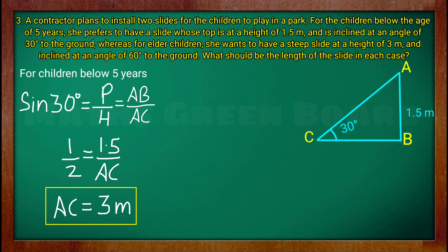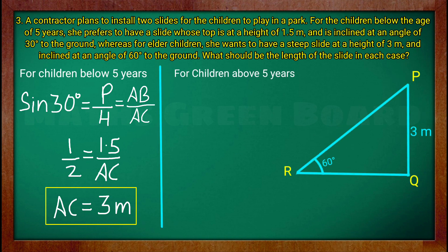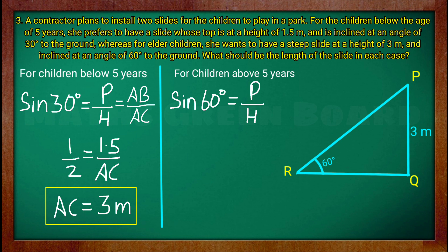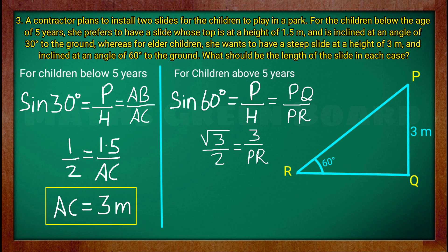Now for children above 5 years. Here we find the perpendicular and hypotenuse. The angle given is 60 degrees. The relationship is sin theta equals P upon H. So sin 60 equals P upon H.